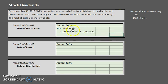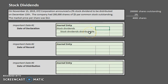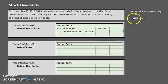Stock dividends are always valued at market value. We are giving out 4,000 shares and the market price per share is $12 as of the date of declaration, so 4,000 times $12 equals $48,000 — that is the debit amount for stock dividends. For stock dividends distributable, we always value at par. So 4,000 shares times the $5 par gives us a credit of $20,000 to stock dividends distributable.